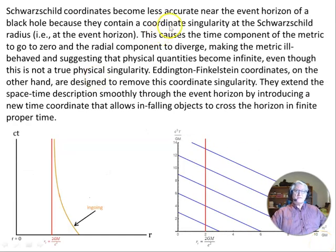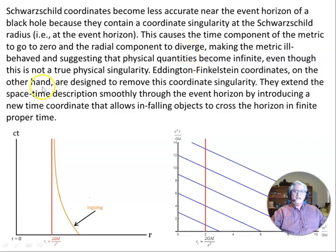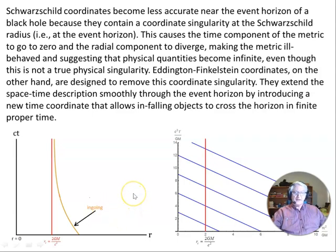Schwarzschild coordinates become less accurate near the event horizon of a black hole because they contain a coordinate singularity at the Schwarzschild radius. This causes the time component of the metric to go to zero and the radial component to diverge, making the metric ill-behaved and suggesting that physical quantities become infinite, even though this is not a true physical singularity.